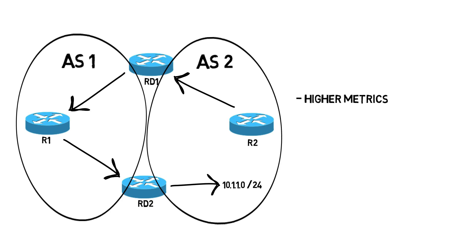Something else we might do is to statically set the administrative distance for a routing protocol. Remember that RIP has a default administrative distance of 120, OSPF has a default administrative distance of 110, and EIGRP has a default administrative distance of 90 — except for external routes injected into EIGRP, which have an administrative distance of 170. Since EIGRP distinguishes between externally learned routes and routes learned within the autonomous system, giving a higher AD to externally learned routes, EIGRP by itself does a great job of preventing this situation from happening.